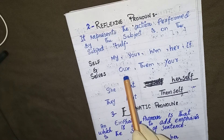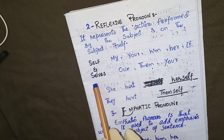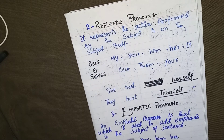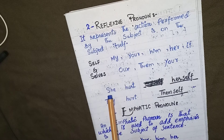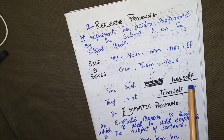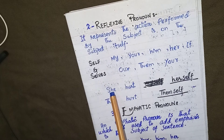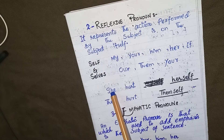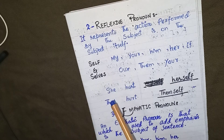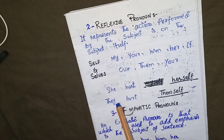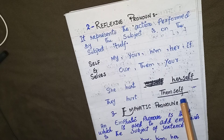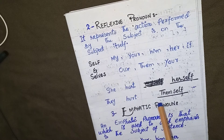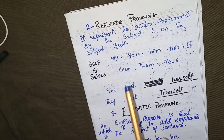'Selves' is used for plural forms: ourselves, themselves, yourselves. Examples of reflexive pronoun: number one, 'She hurt herself' — here 'she' is the subject and 'herself' is the object, so the action returns to the subject. Number two, 'They hurt themselves' — subject and object are the same.